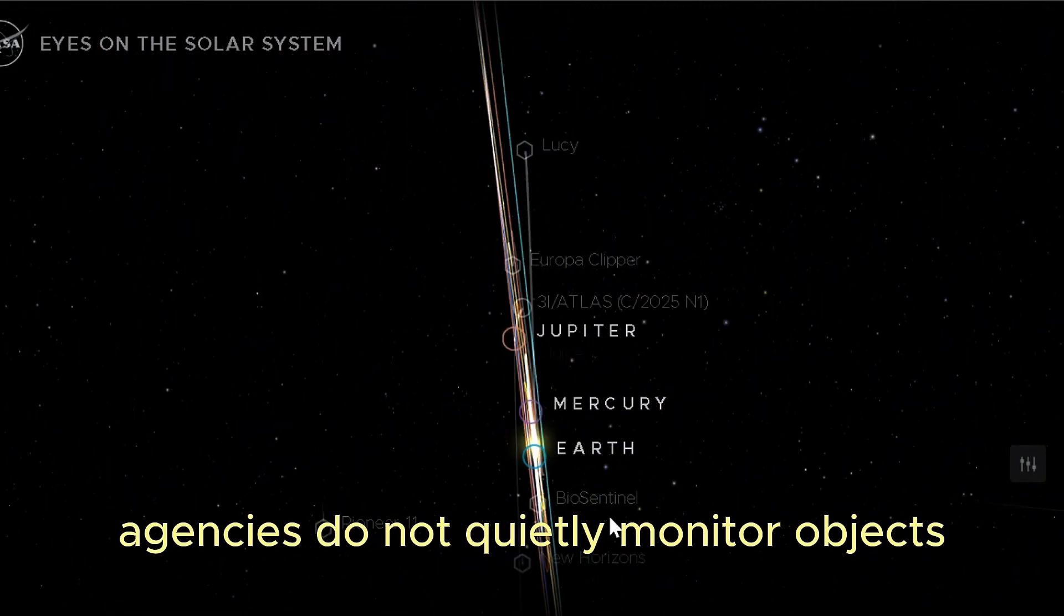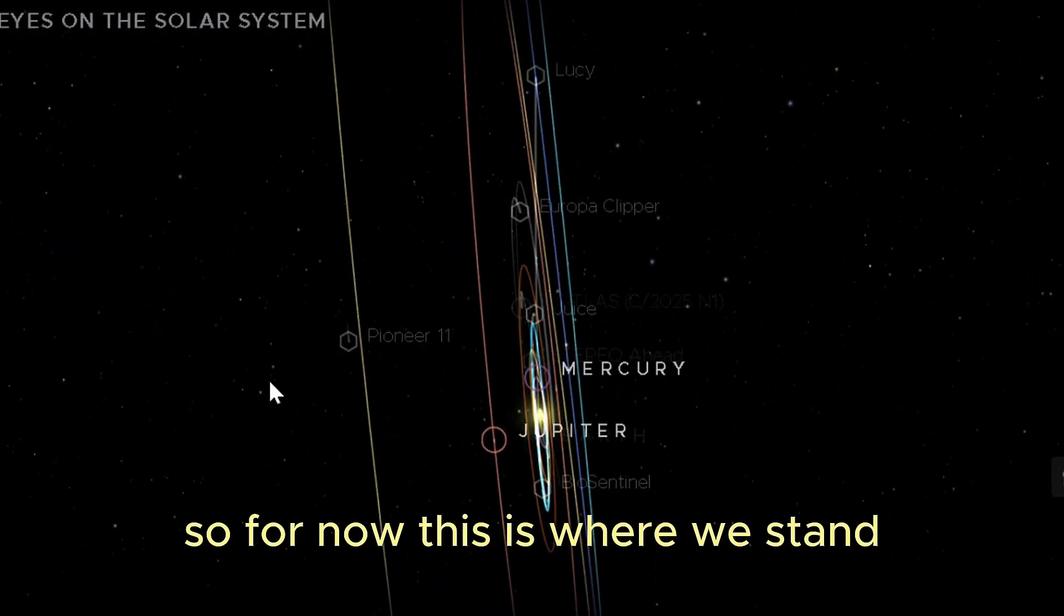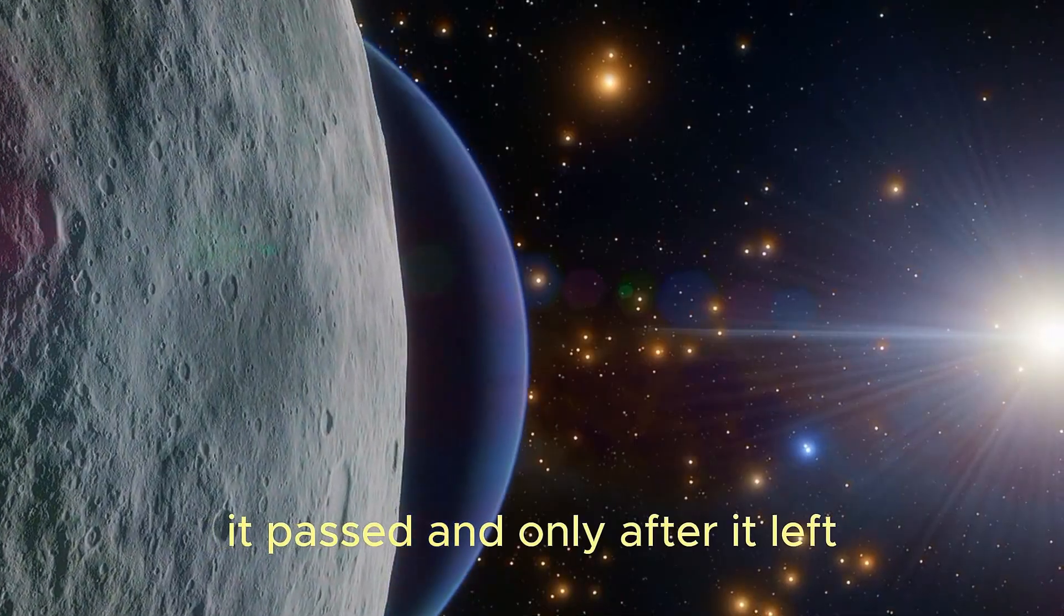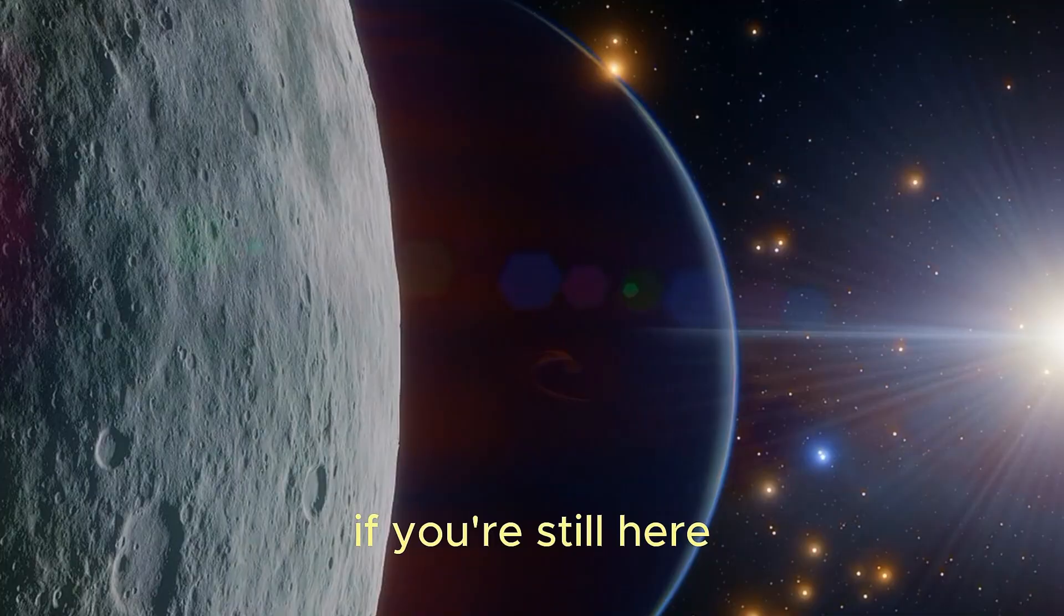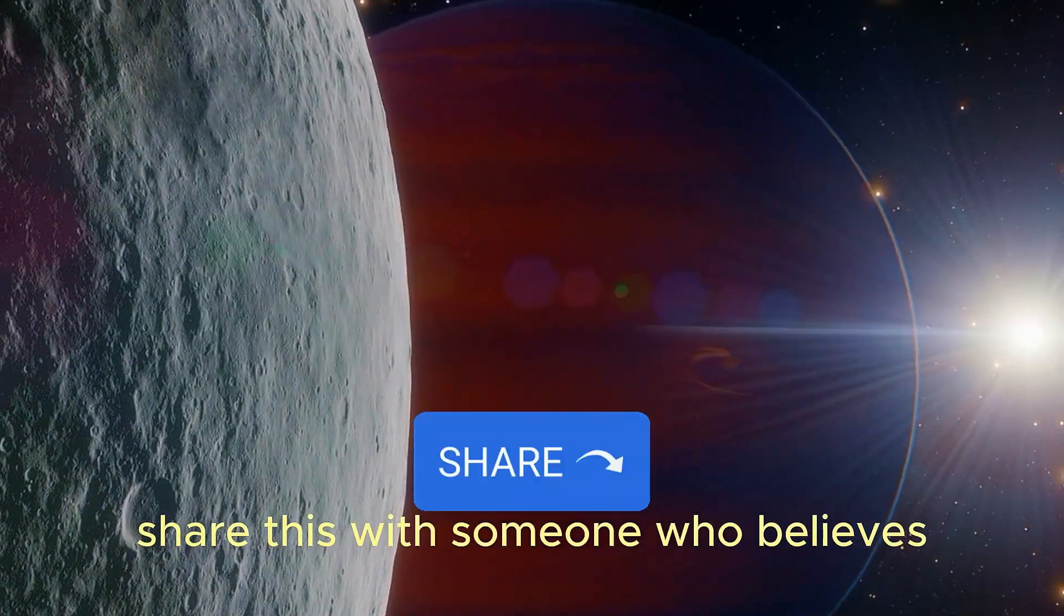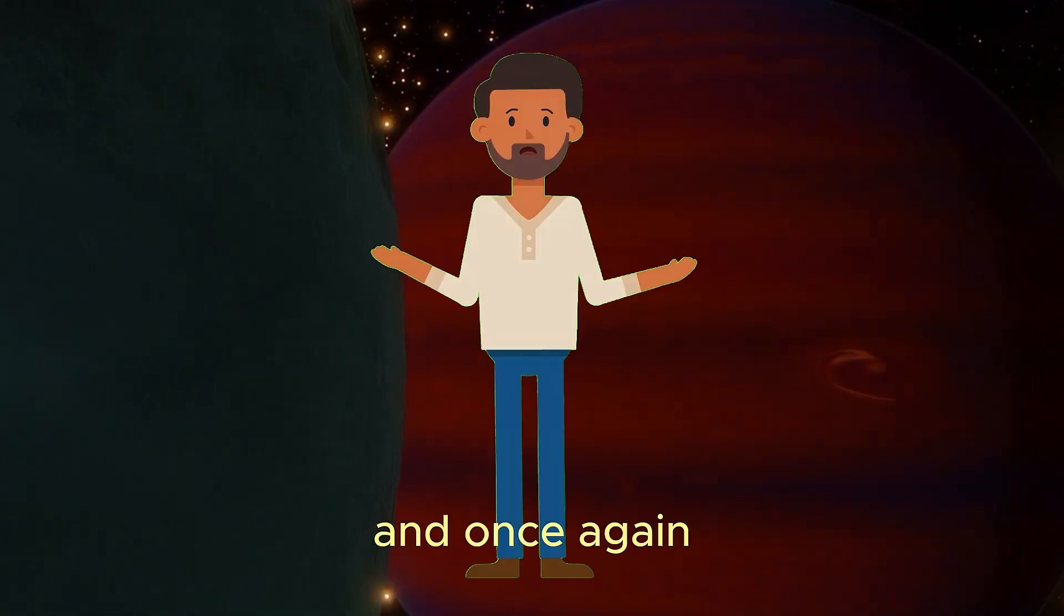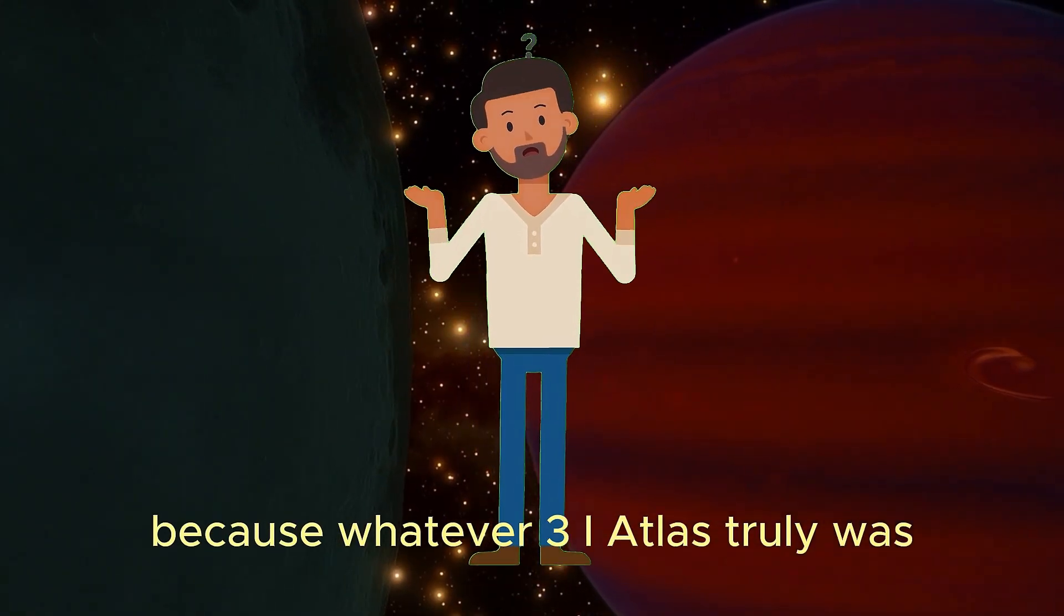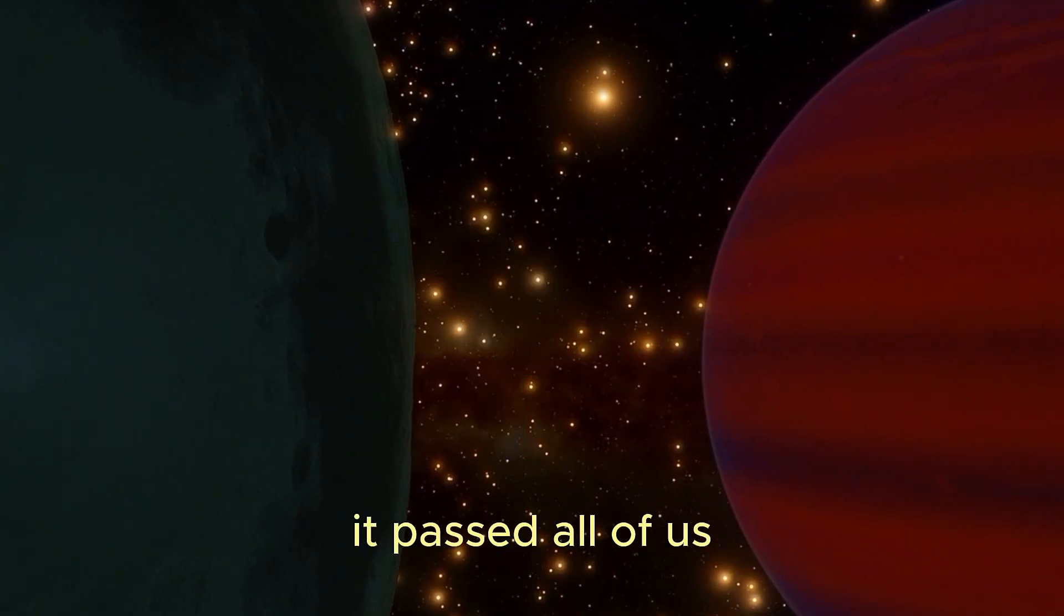So for now, this is where we stand. An interstellar object came, it passed, and only after it left did its behavior hint at patterns we do not yet know how to classify. If you're still here, you understand why this story isn't over. Make sure you're subscribed. Share this with someone who believes space is always simple and predictable. And once again, tell me in the comments where you're watching from, because whatever 3I Atlas truly was, it didn't pass just one country or one city. It passed all of us.